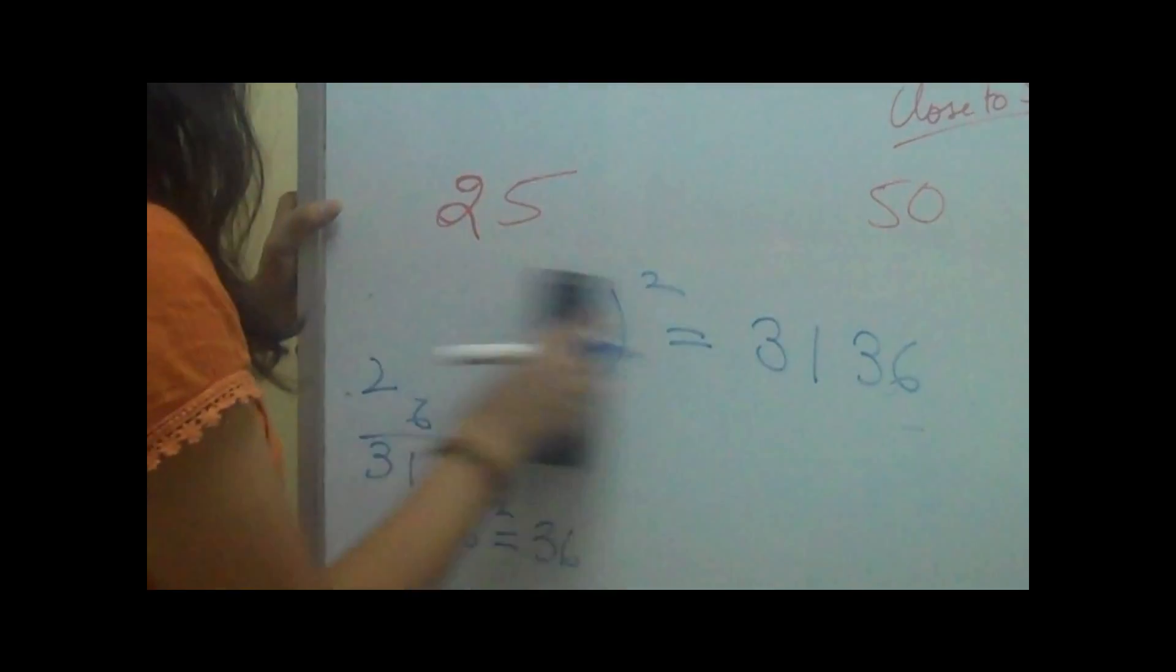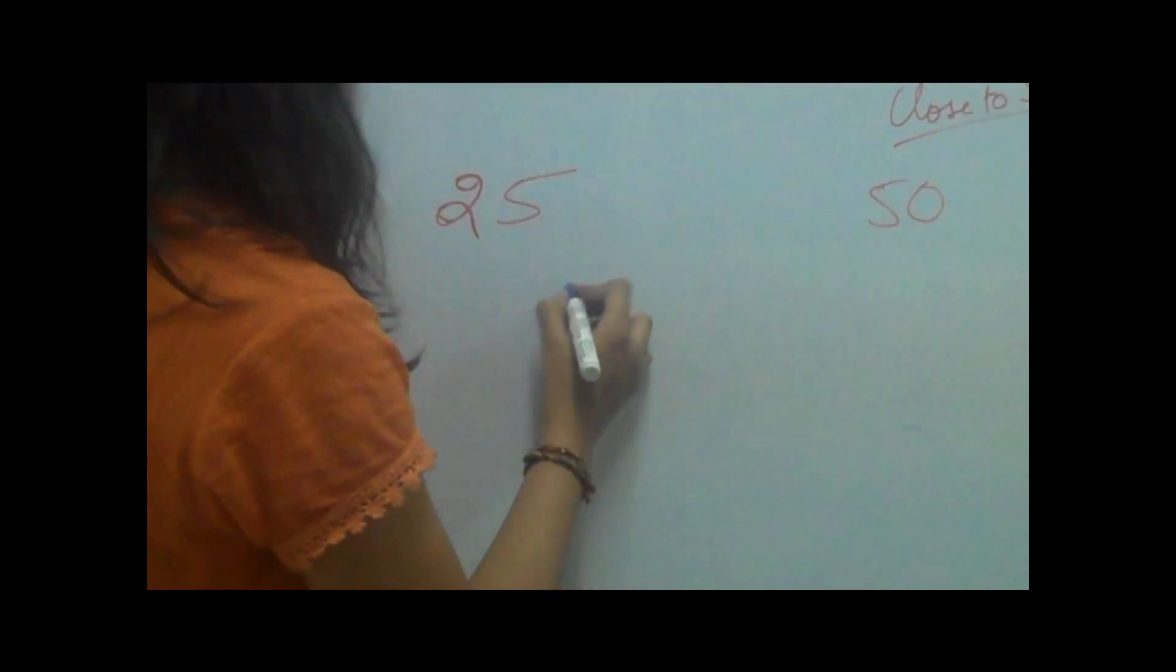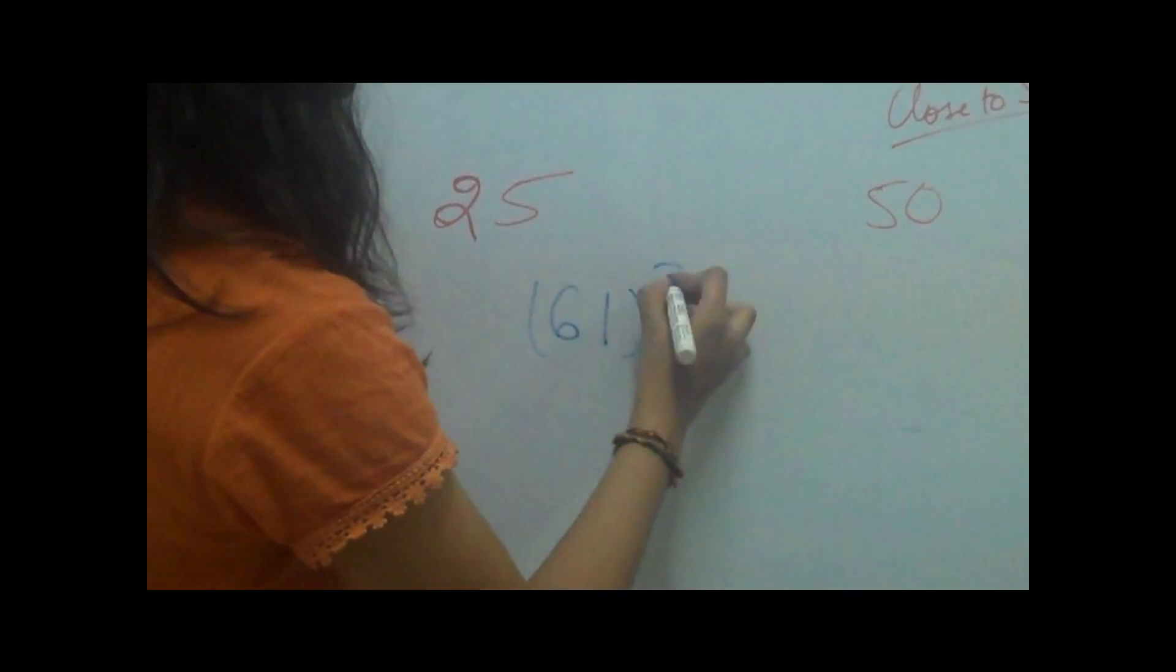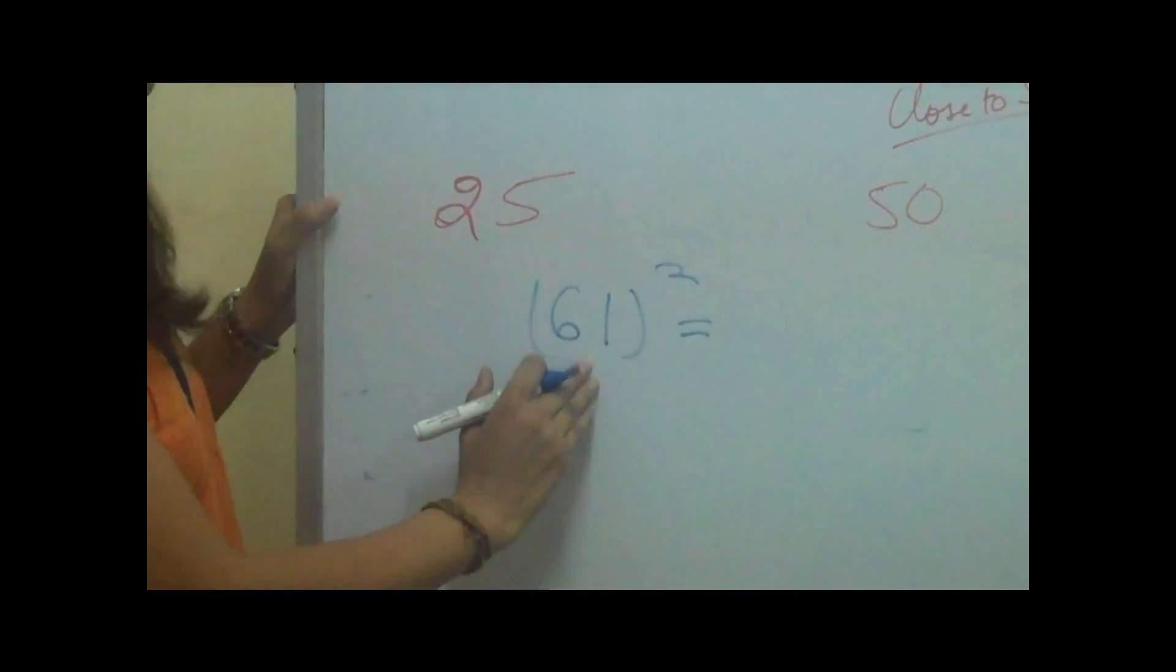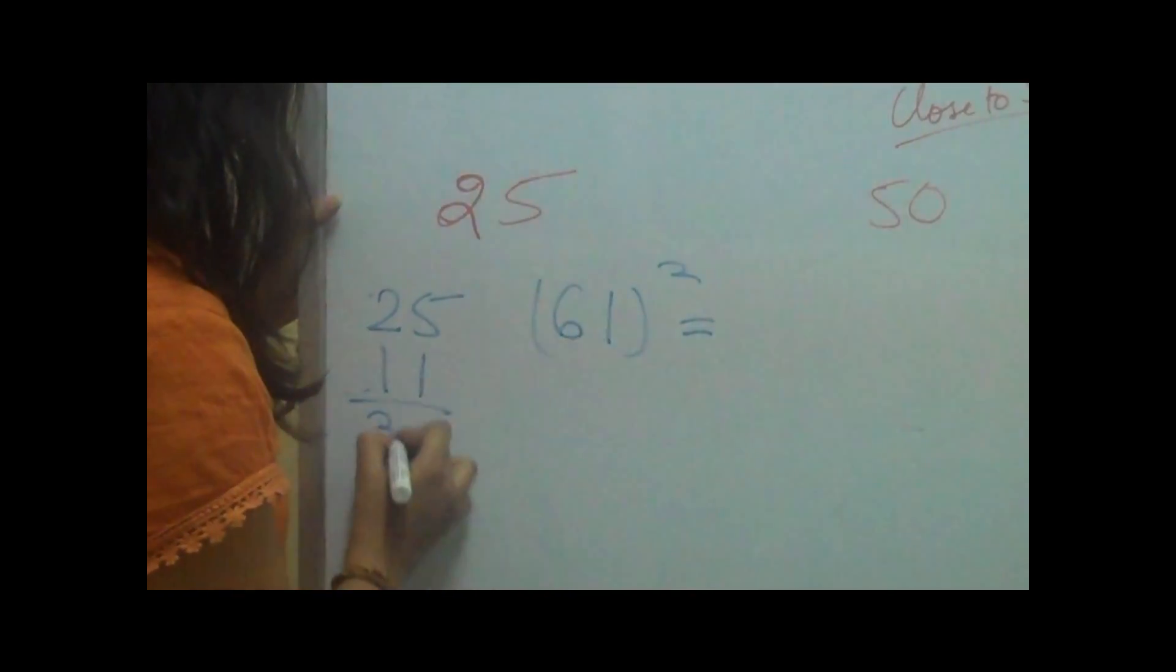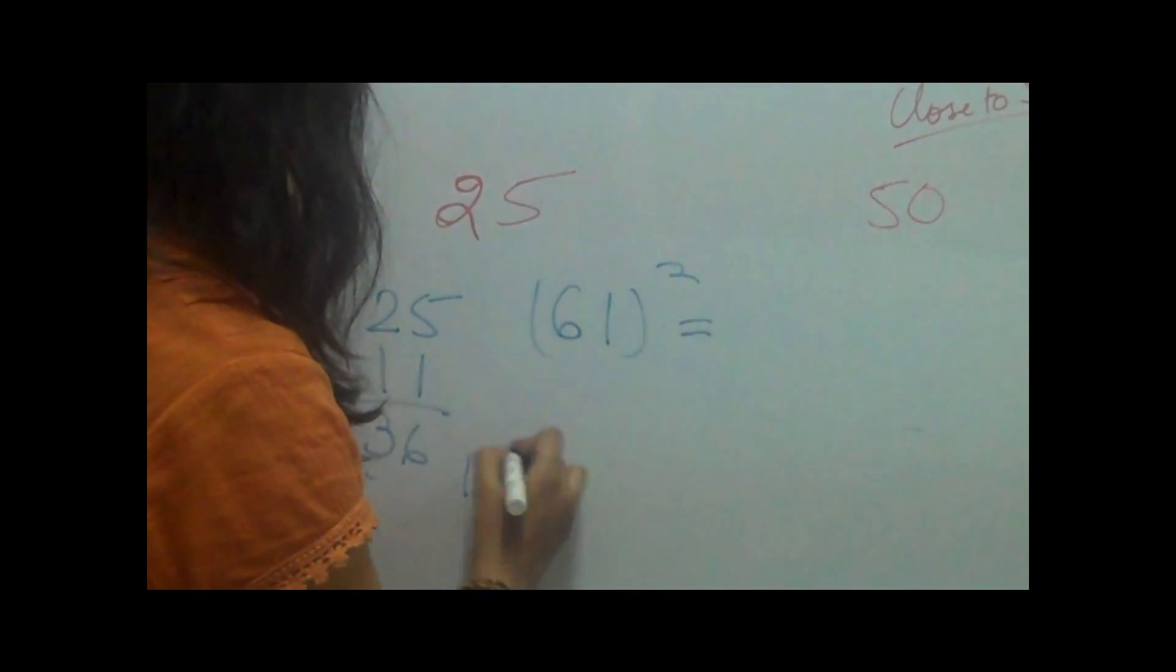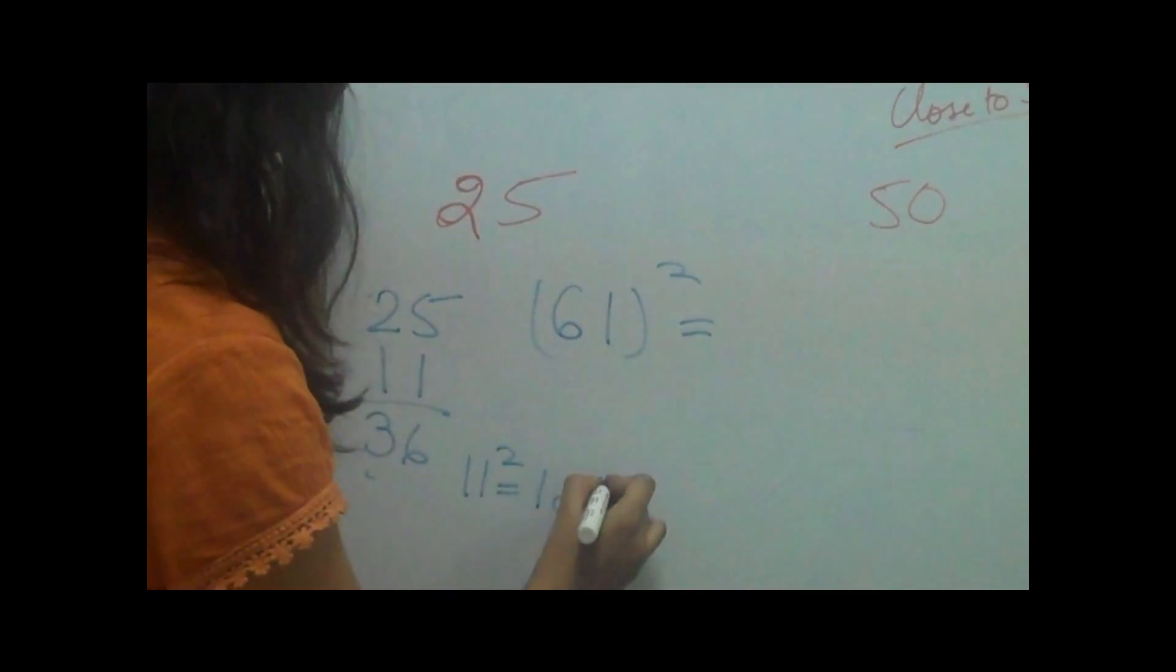Let's take another example. 61 squared. Now 61 is 11 more than 50. We'll add 11 and 25 which makes 36. Then we'll square the 11. 11 squared is 121.